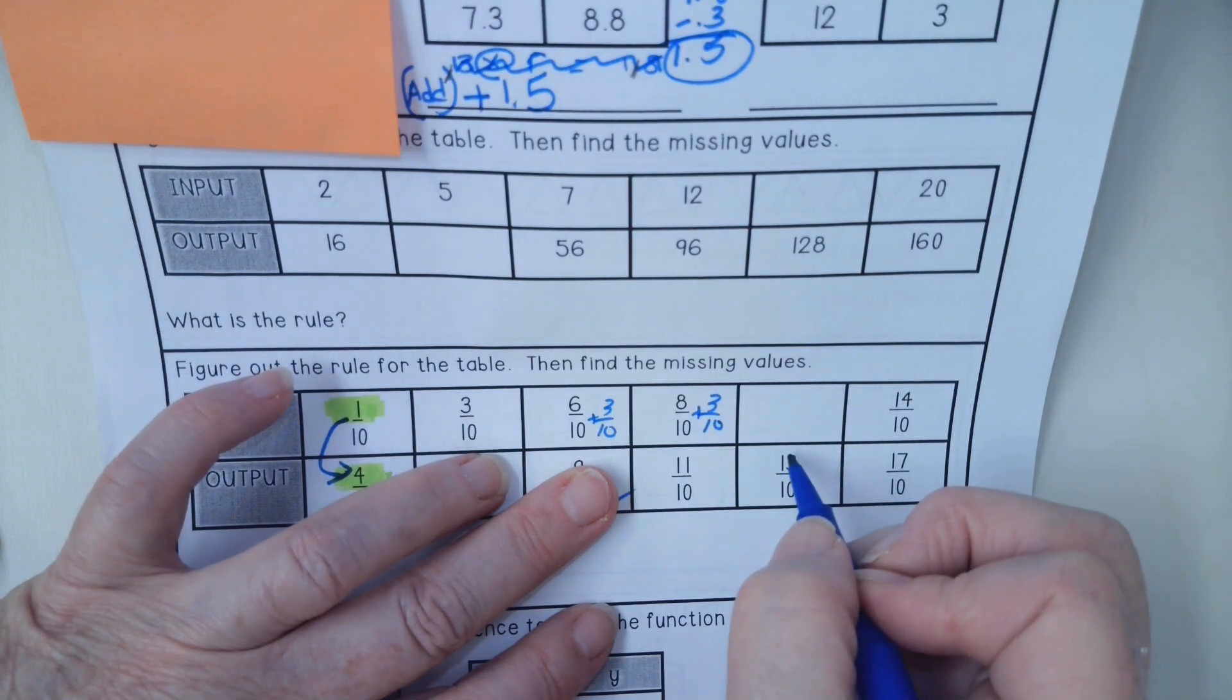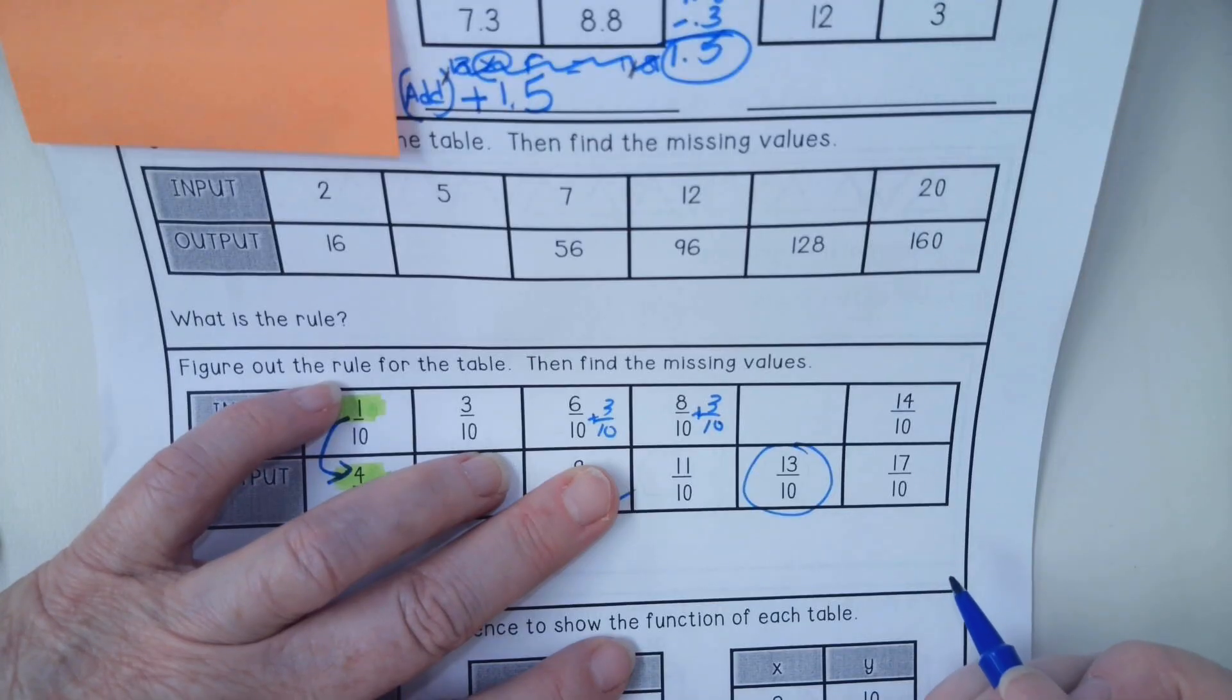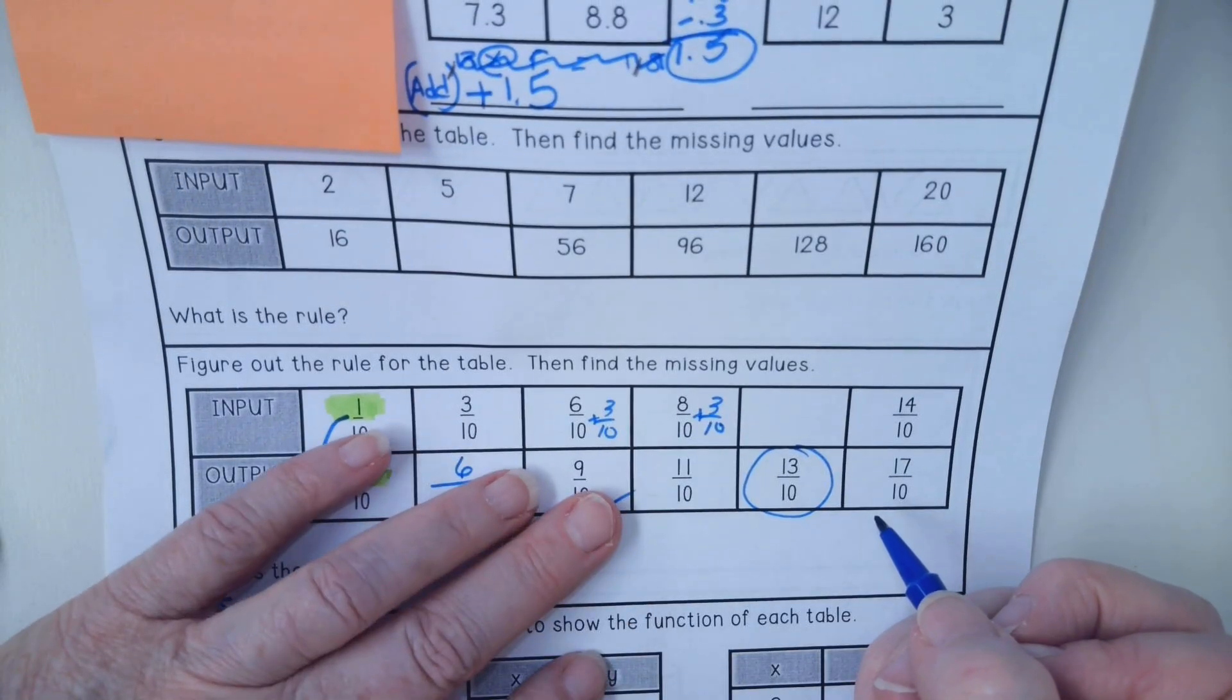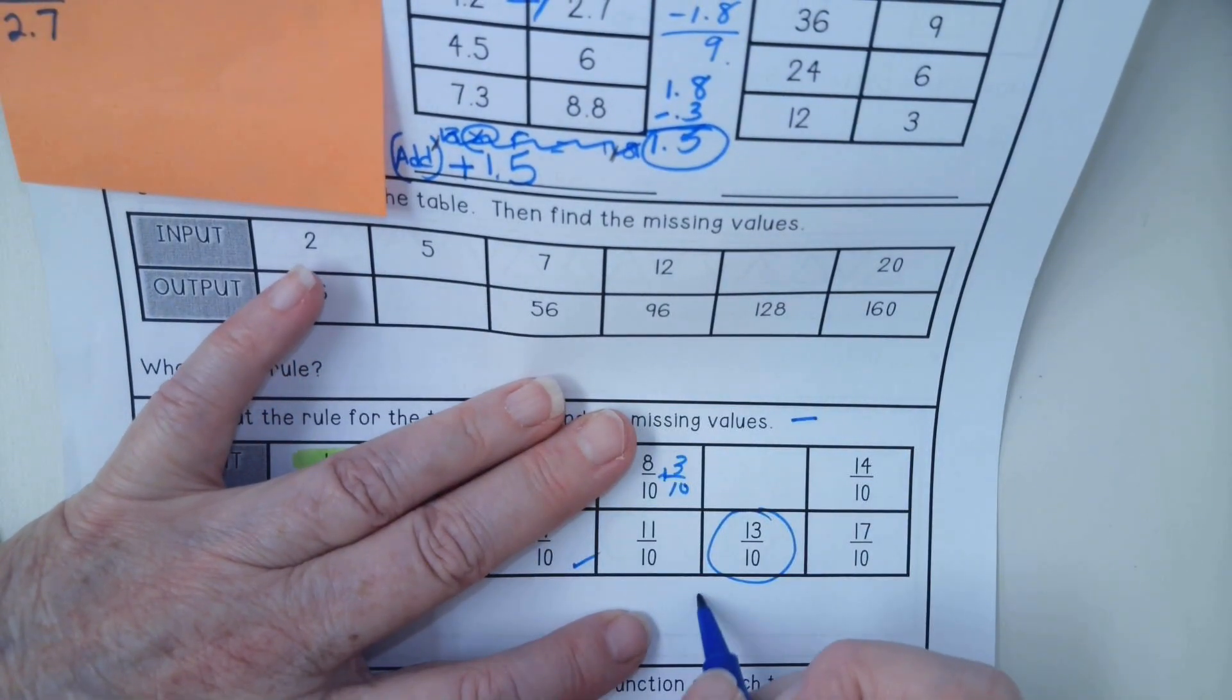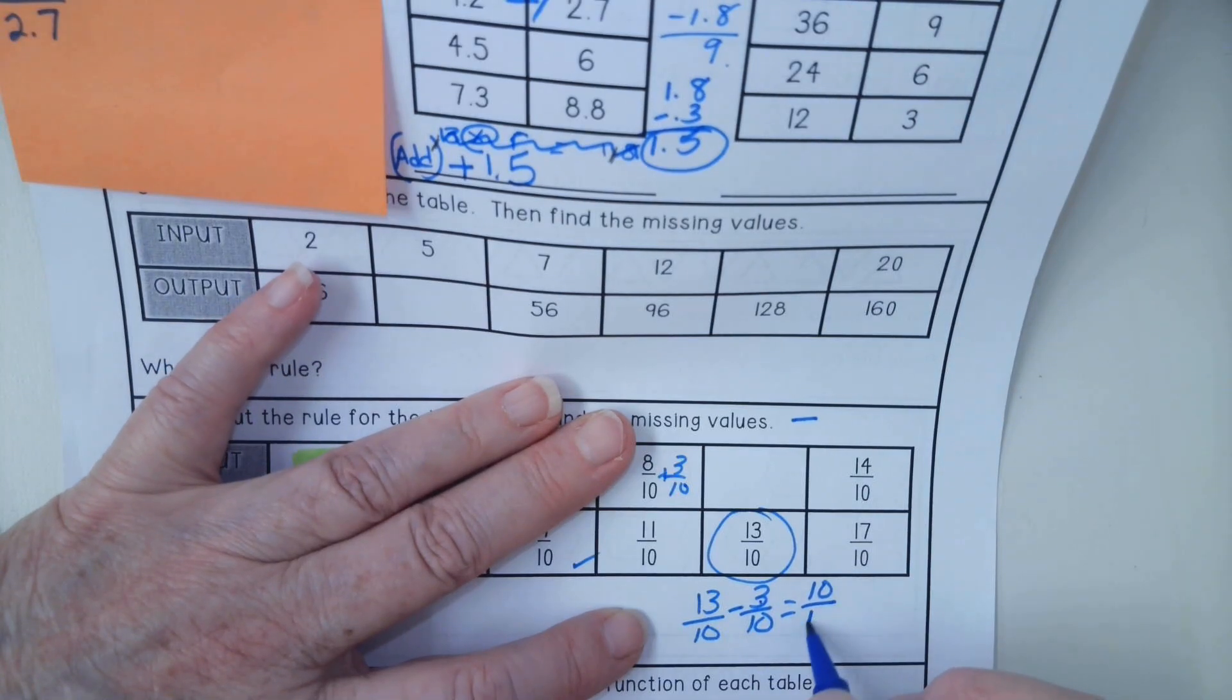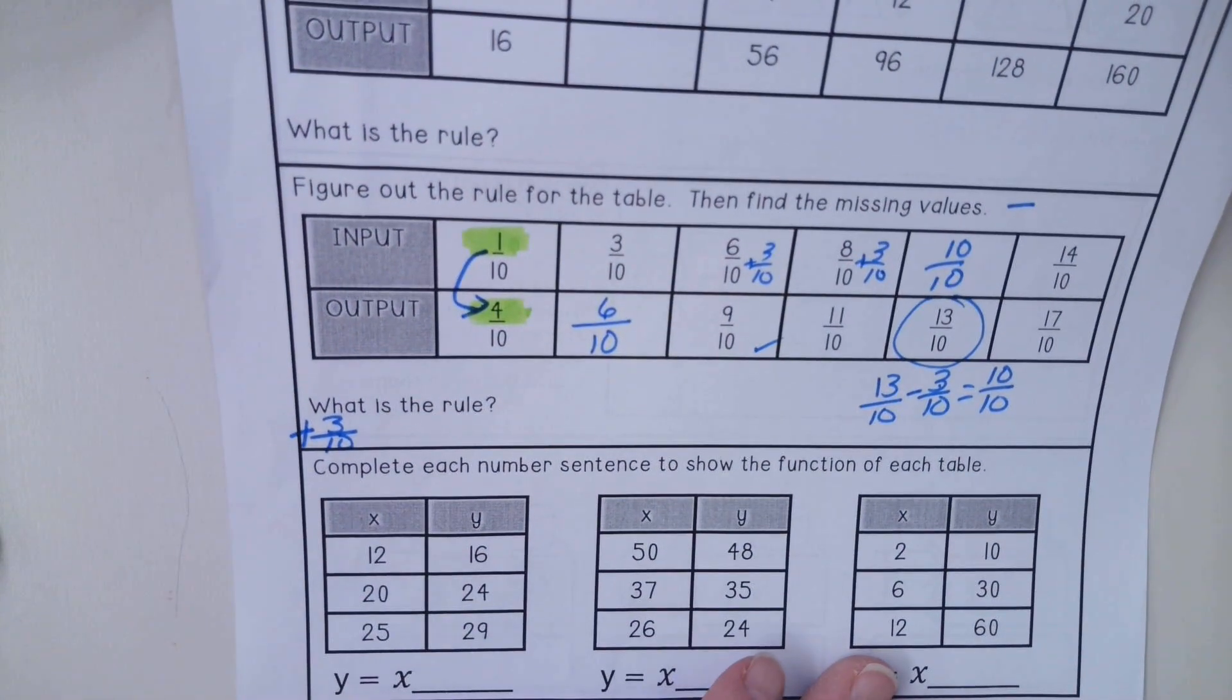Now we have to do something different because we have the output, but we don't have the input. If you're in Mr. Biggs' room, he talked about the inverse relationship. So what is the inverse of addition? It is going to be subtraction. We're going to take 13 tenths and we're going to minus 3 tenths. 13 minus 3 is going to give us 10 tenths. I helped you out with that. You can go ahead and work on the rest.